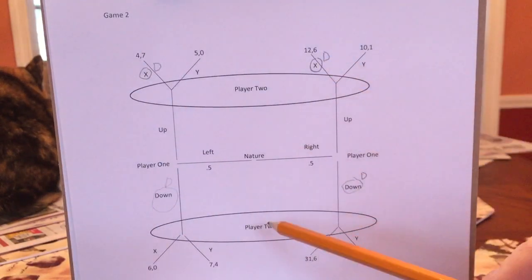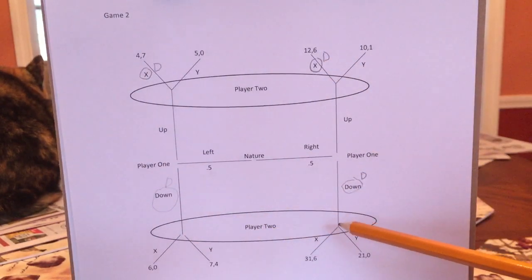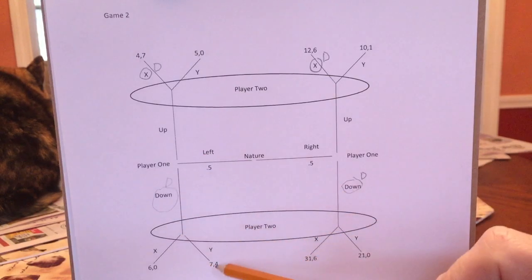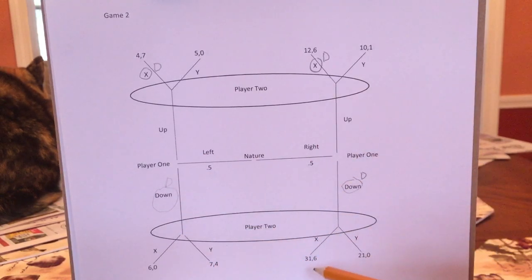Now, you're Player 2 and down is played. Well, if you were here, you would want y, and if you're here, you would want x. Okay, so there's no dominant strategy here.